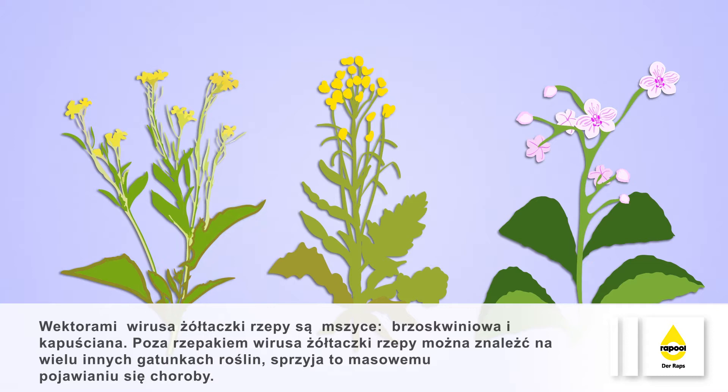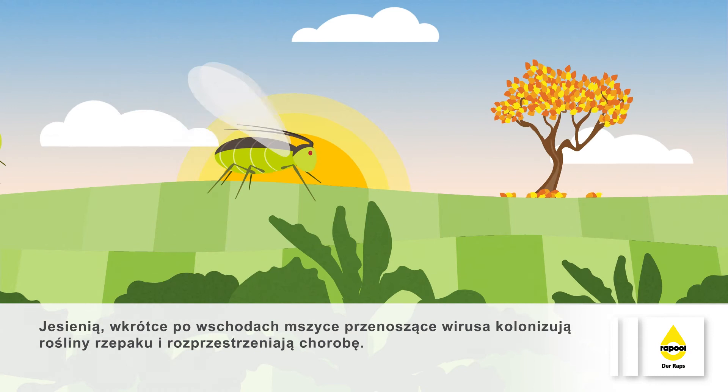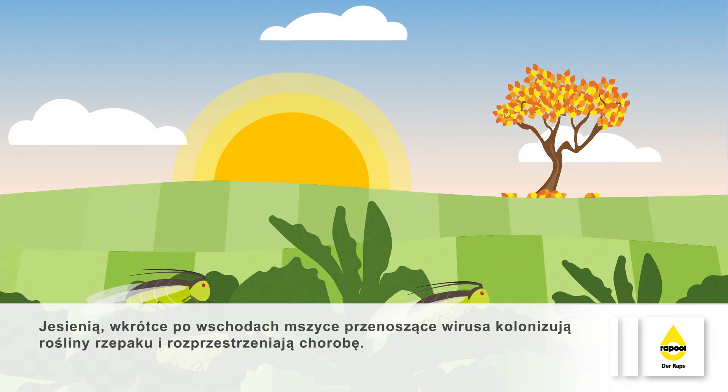In autumn, shortly after the rapeseed has emerged, virus-carrying aphids colonise the rapeseed plants and transmit the disease.